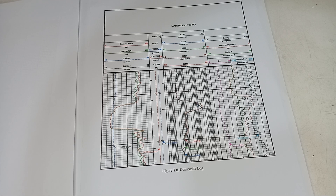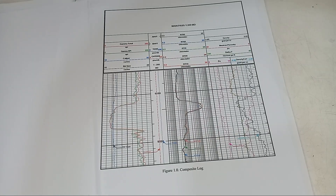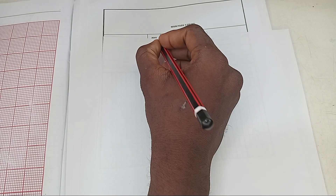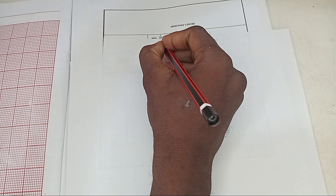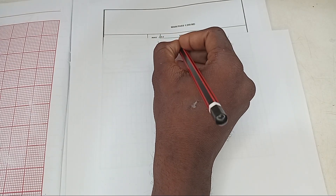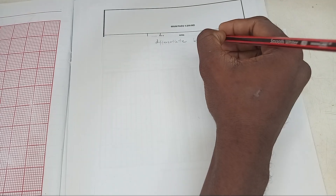Our first log is the gamma ray log. What is the gamma ray log? The gamma ray log is a log that tells us about the lithology — it helps us to differentiate between lithologies.